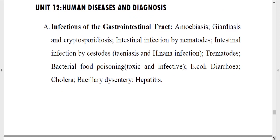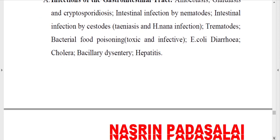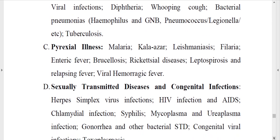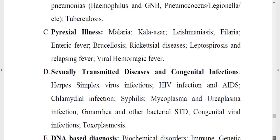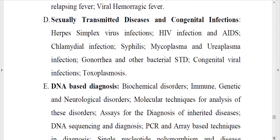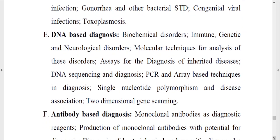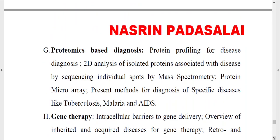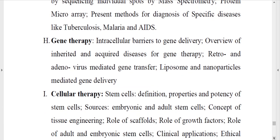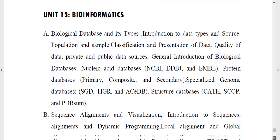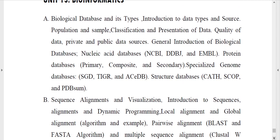The next unit is Human Disease and Diagnosis. Give special concentration to infections of the gastrointestinal tract, respiratory system, and other listed diseases. You need to know the list of diseases, the causative organism, diagnostic methods, and preventive methods. Give special importance to studying sexually transmitted diseases. After studying the diseases, focus on DNA-based diagnosis, antibody-based diagnosis, proteomic-based diagnosis, and therapies such as gene therapy, cellular therapy, recombinant therapy, and immunotherapy.